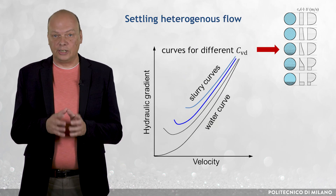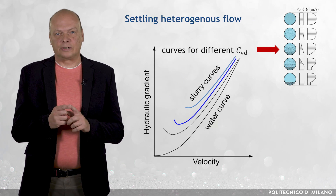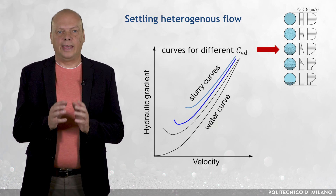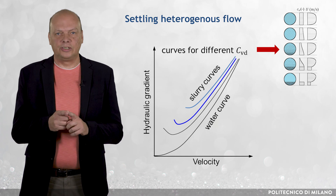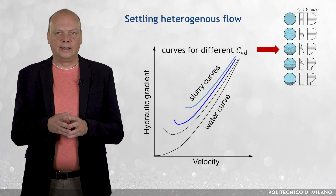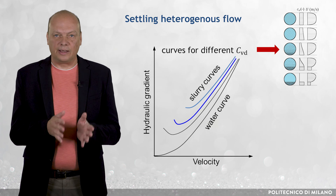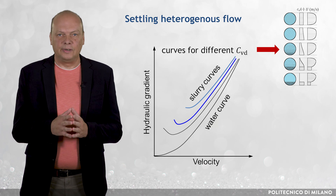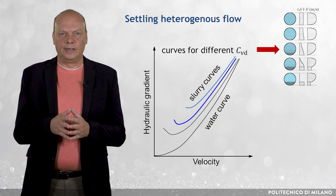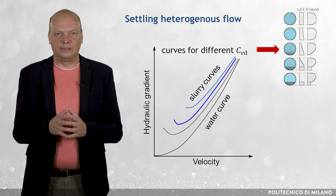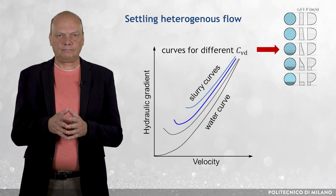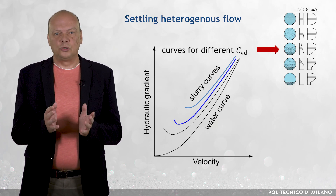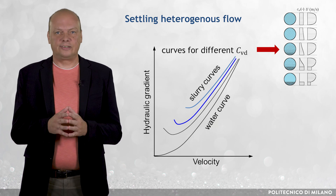In heterogeneous flow, a pipe characteristic curve for slurry flow of constant delivered concentration exhibits a minimum point. The change in the trend of the hydraulic gradient with decreasing velocity, passing the velocity at which the gradient is minimal, is associated with increasing stratification of the flow and the establishment of a granule bed at the bottom of the pipe. The velocity at the minimum is usually close to the deposition limit velocity, but those two velocities are not necessarily the same.